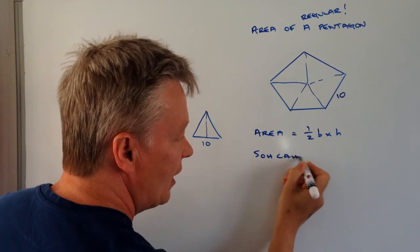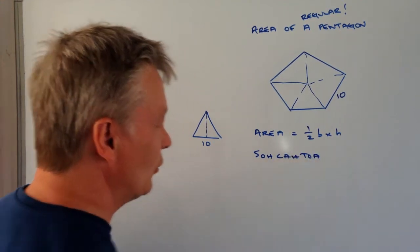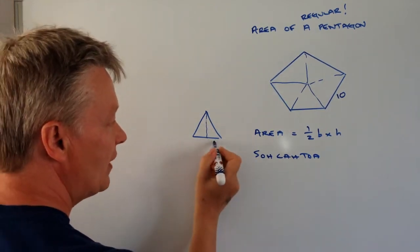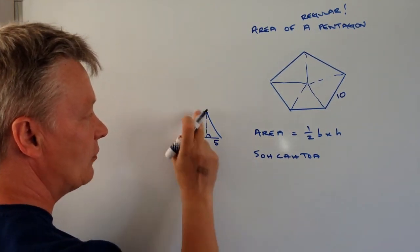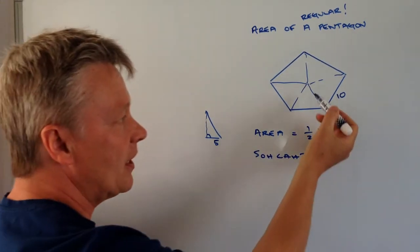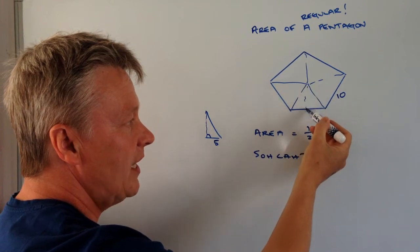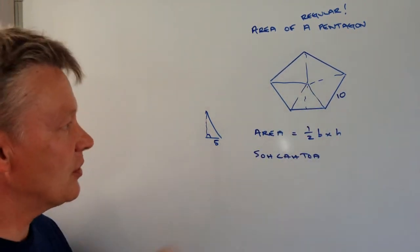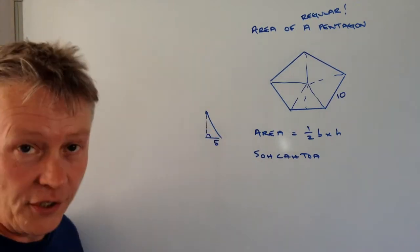Because we can create a right angle triangle from this just by saying, well the base is now 5 and that's a right angle and I can get rid of that. And what I do know then is that if I take this right angle triangle here, just half of one of these triangles, then I can use Sokotoa to work out the vertical height.